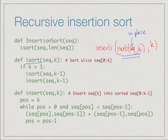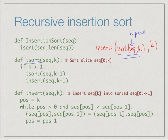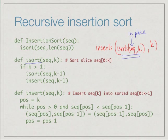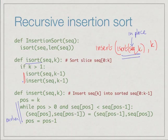i_sort checks for the base case: if k is 0 or 1, we are sorting nothing or one element, so we return the sequence unchanged. Otherwise we recursively call i_sort for k-1 positions and then insert the element at the last position into the sorted slice. The insert function does exactly what we did in regular insertion sort: it sets a position variable to the last position and walks left, swapping as long as it hasn't reached the left edge and finds something strictly bigger than the current value. The new part is this recursive call, which sorts up to k-1 then inserts the current value.